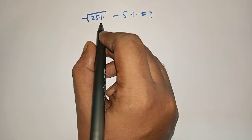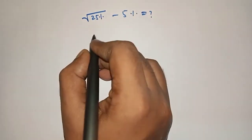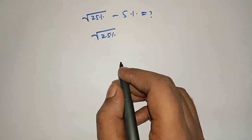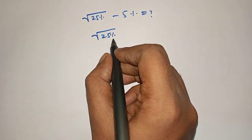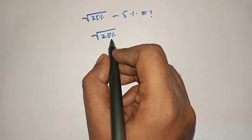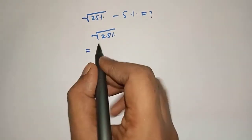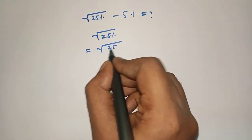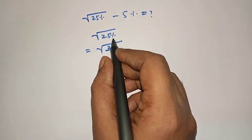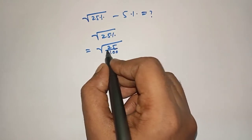Square root of 25%. Here we have to remove the percent sign. So what we have to do? We have to divide by 100. 25 by 100 to remove the percentage sign, divide by 100.